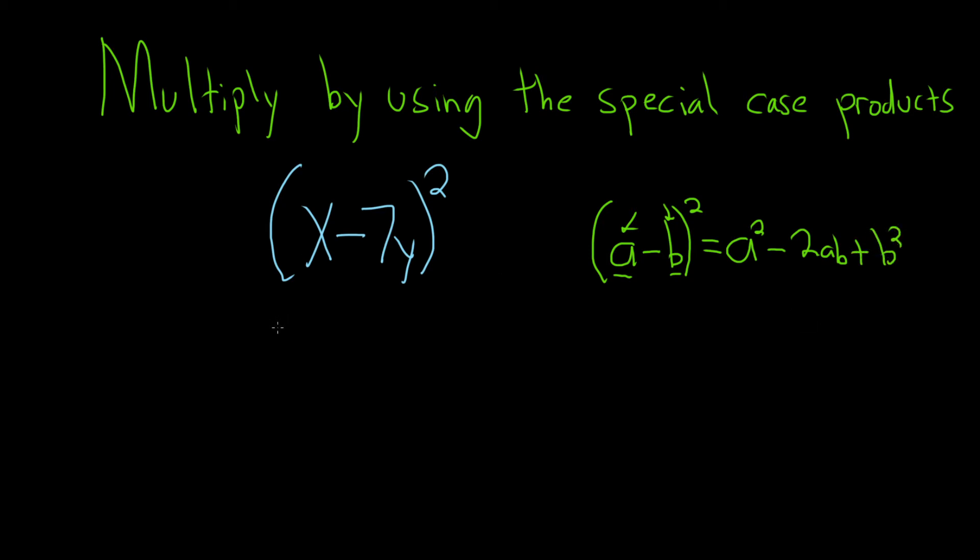So let's apply it here to our problem. So you square the first one, so you'll get x squared. You keep the sign. Then you multiply these two, and then you double it. So it'll be minus 7xy, but then you double it, so it's minus 14xy.